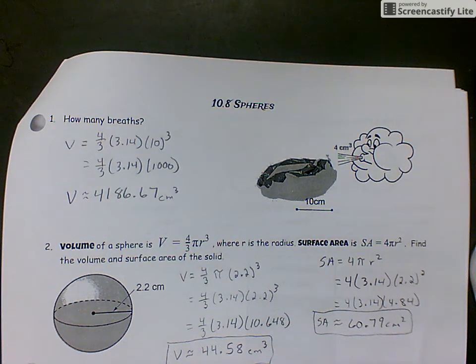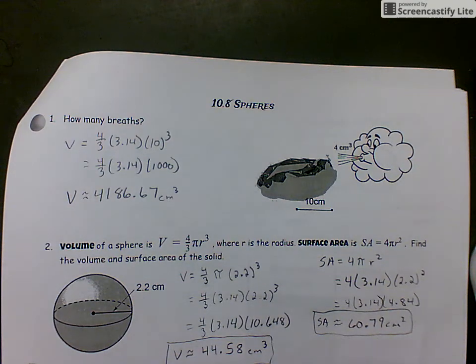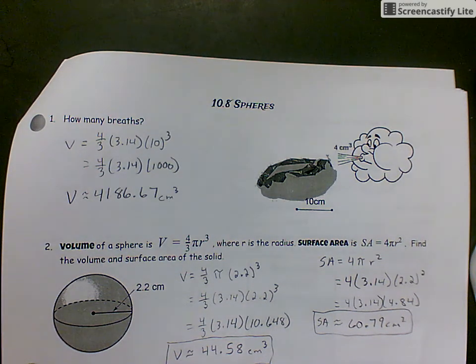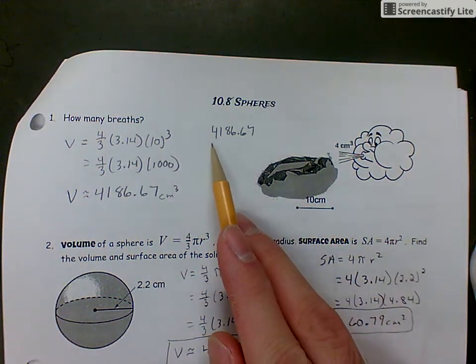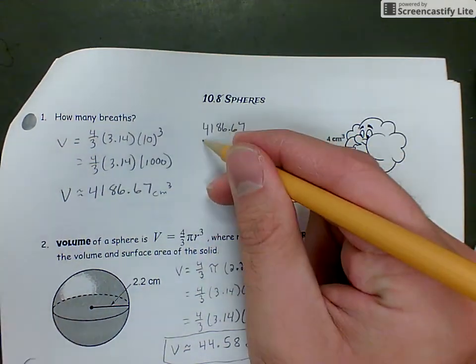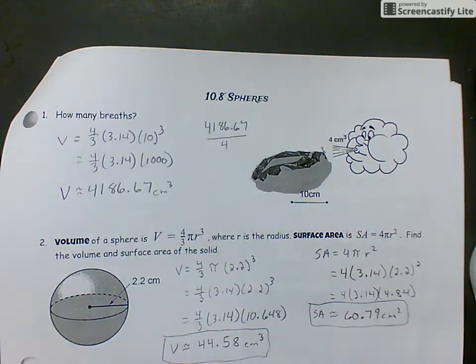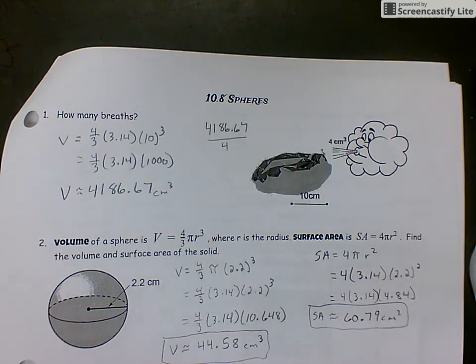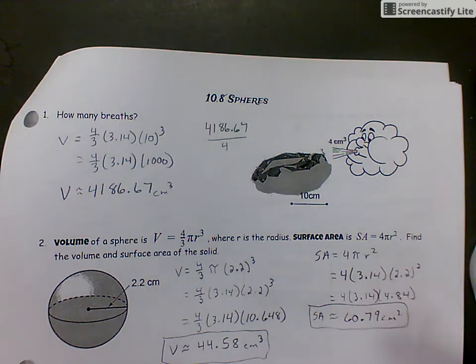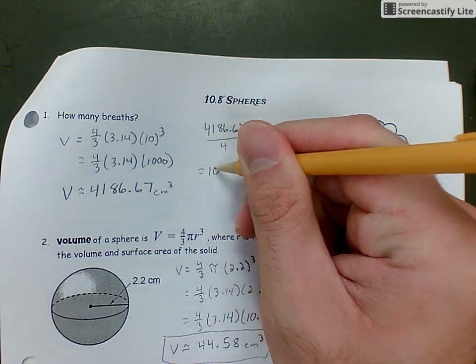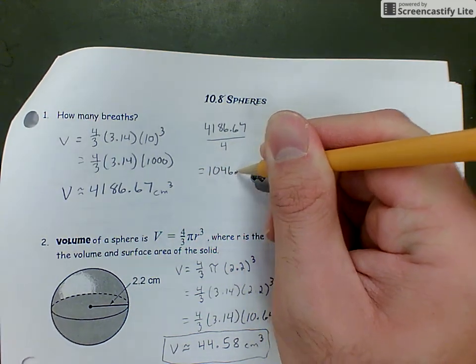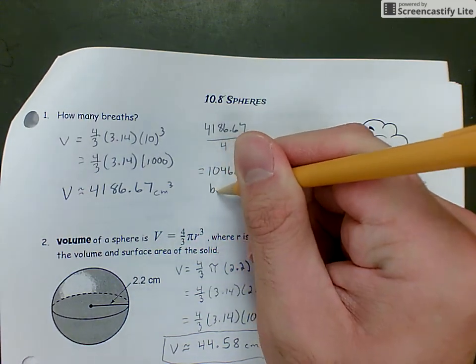Now if that cloud is blowing air into the beach ball, let's figure out how many times he would have to blow. We need 4,186.67 cm³ of air and his breath is 4 cm³ each time. Take that answer and divide it by 4 to get 1,046.67 breaths.